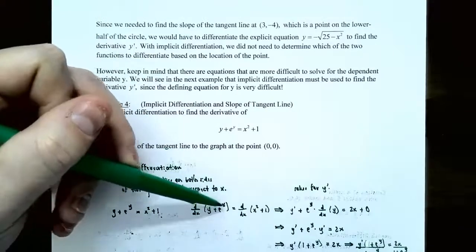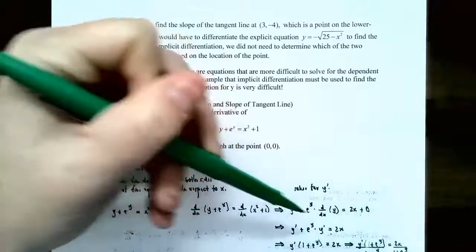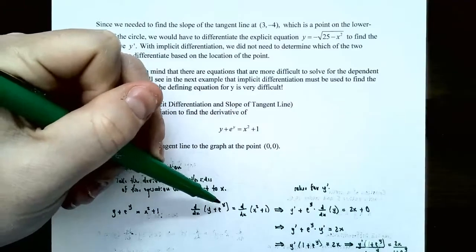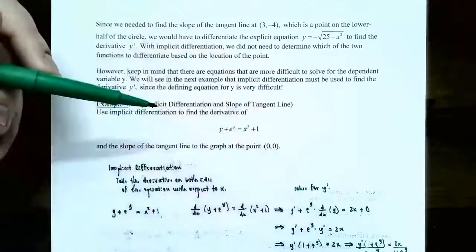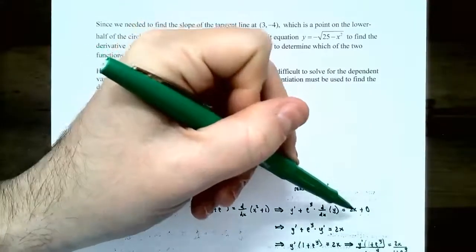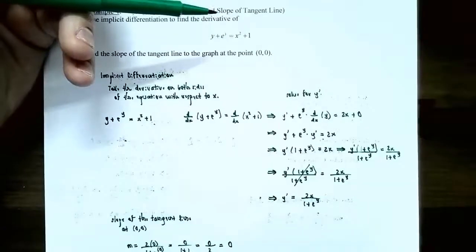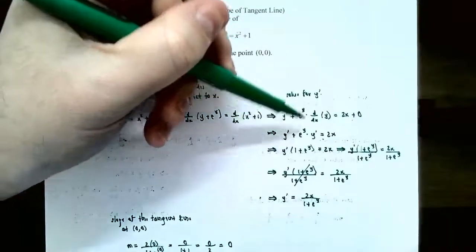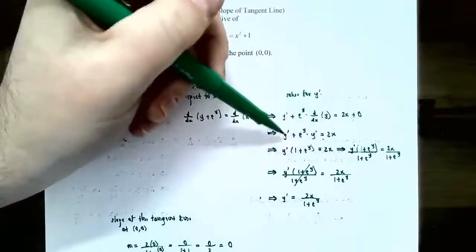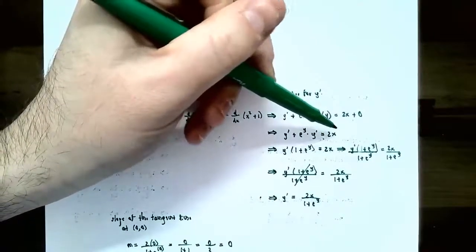The derivative of e to the y is a composite function. The derivative of the outside function is e to the y, but then you take the derivative of the inside function — since y is a function of x, you multiply by y prime. On the right side, there are no y's, so just normal derivatives: the derivative of x squared is 2x and the derivative of 1 is 0. So we have y prime plus e to the y times y prime on the left side, and 2x on the right side.